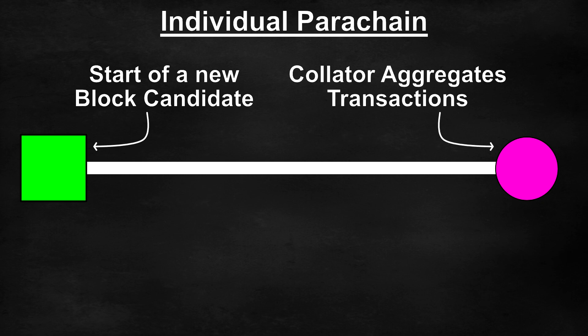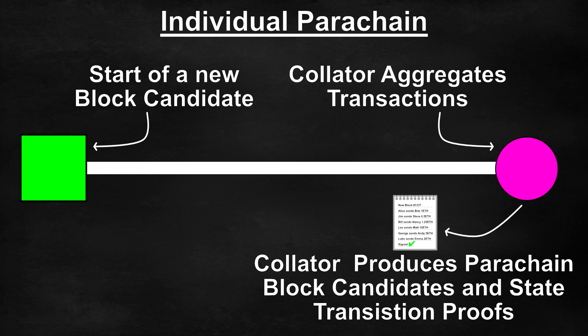The collator aggregates, combines all of the transactions. The collator then signs the parachain block candidate and produces state transition proofs. Think of these state transition proofs as a summary of the final account balances caused by the transactions in this block.